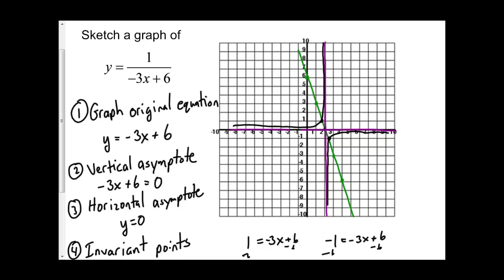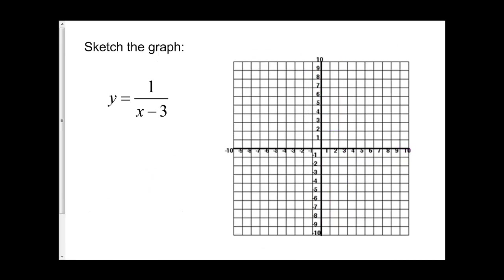Let's look at another example. Here we have y equals 1 over x minus 3. I'm going to start the same way — beginning at my y-intercept with a slope of 1, going up 1 and over 1. So I've got my original graph of y equals x minus 3, and I can connect the lines to make it easier.